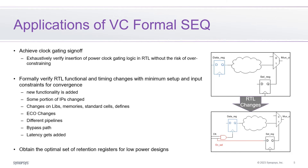Another key application is to verify RTL transformations, such as when new functionality is added, IP changed, library, memory, or standard cells changed, defines changed, ECO changed, and retiming involving different pipelines, bypass paths, and added latencies. VC Formal Seq is used to verify that an RTL change does not impact the portion of the design that was not changed. It offers great productivity since it requires minimum setup and input constraints to achieve convergence.